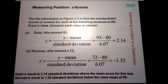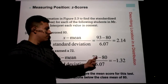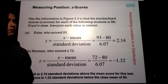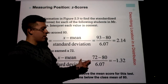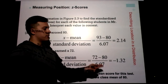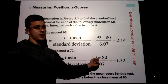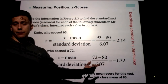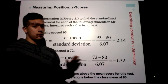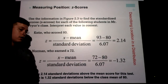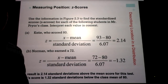What about a z-score of zero? What number minus 80 divided by 6.07 equals zero? That number is 80 — because 80 minus 80 is 0, and 0 divided by any number is 0. So a z-score for a number equal to the mean is always going to be zero.